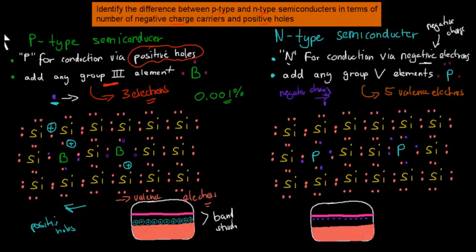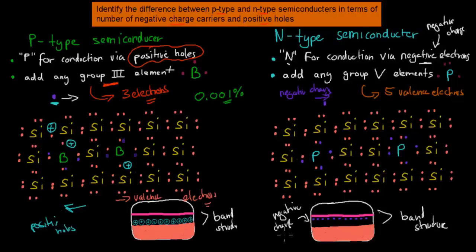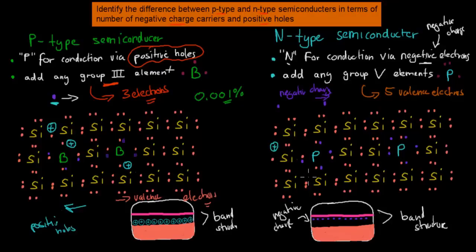So for N-type semiconductors, the band structure will look a bit like this. We're going to have a normal band structure of any semiconductor, and what we've added are these purple dots representing our negative charge carriers, because the extra potential is done by having extra negative charge carriers. Again, there are going to be some positive holes, because some of the silicon atoms will have electrons gain enough energy to jump to a higher state and become a conduction electron, leaving behind a positive hole. But overall, the reason why an N-type semiconductor is a better conductor than a normal semiconductor is because it has extra negative charges. A normal semiconductor will have a couple of conduction electrons and a couple of positive holes, whereas the N-type will have the same plus your extra electrons, so those extra negative charge carriers give it a higher electricity-carrying potential.